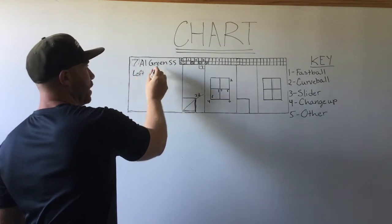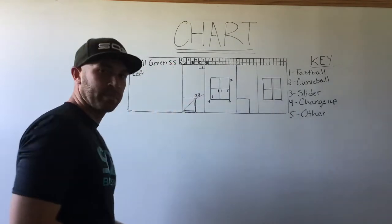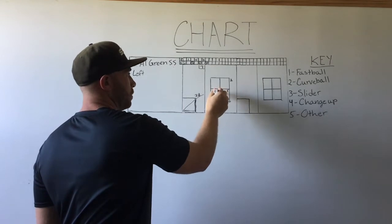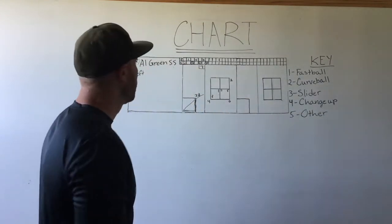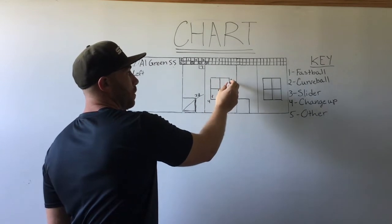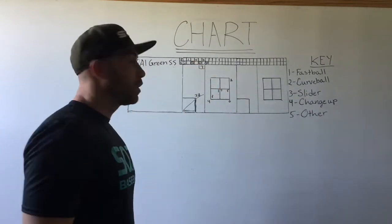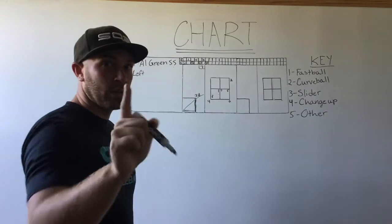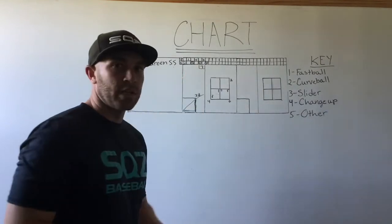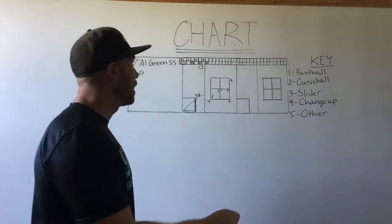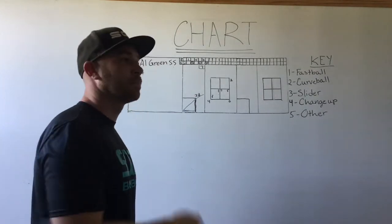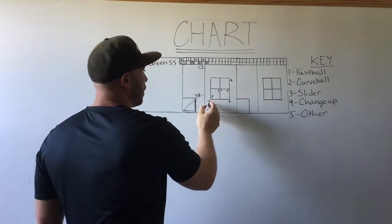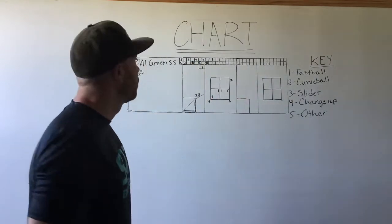Al Green is the shortstop and he bats left. Our pitcher throws him strike one, which is a curveball. Then we throw ball one, which is a fastball up and in. Then we throw strike two, which is a fastball down in the zone. The reason why this one is circled is because Al Green swung at that pitch — every time they swing, you circle it. Then we threw a change-up down in the zone for ball two.